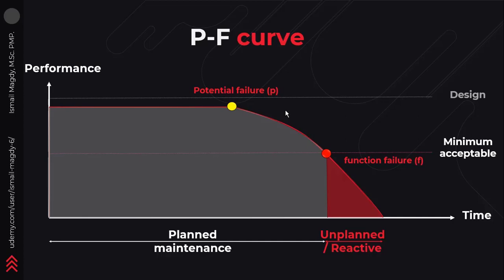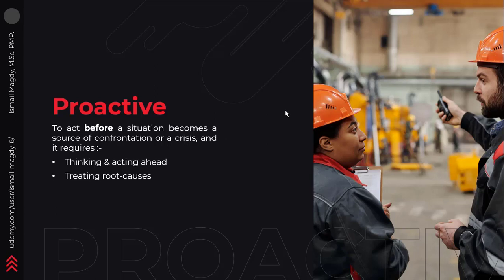In maintenance management, we aim to minimize reactive maintenance as much as possible and be proactive as much as possible. Normally, we aim to have not less than 80% of the maintenance activities as planned maintenance, and less than 20% as reactive maintenance. Being proactive is simply to act before a situation becomes a source of confrontation or a crisis. In order to be proactive, we need to start thinking and acting ahead, as we don't want to wait till the failure occurs to start dealing with it. To achieve that, we need to treat root causes of any problem instead of just treating the visible symptoms.